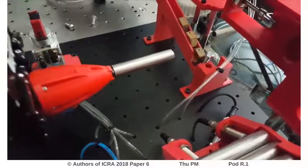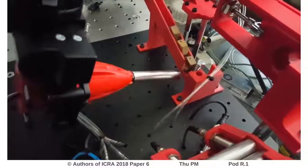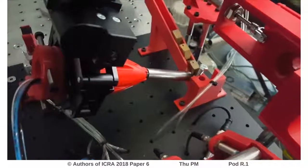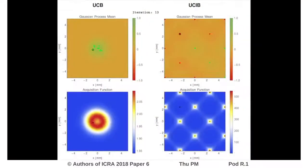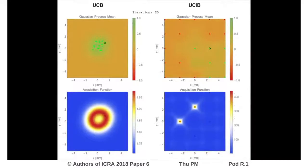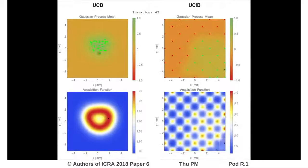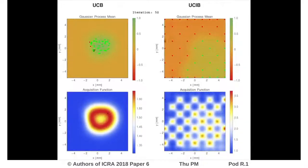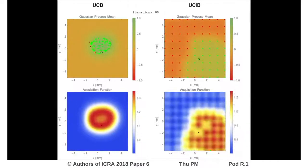The remaining part of the video visualizes the learning data and compares our proposed method, UCIB, and the traditional approach, UCB. The left column shows UCB and the right column shows UCIB. The first row shows the mean predicted by Gaussian processes and the second the acquisition function. The green and the red points represent success and failures. The black circle shows the current sample.